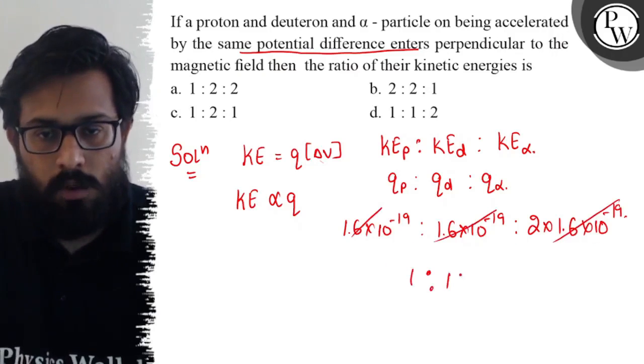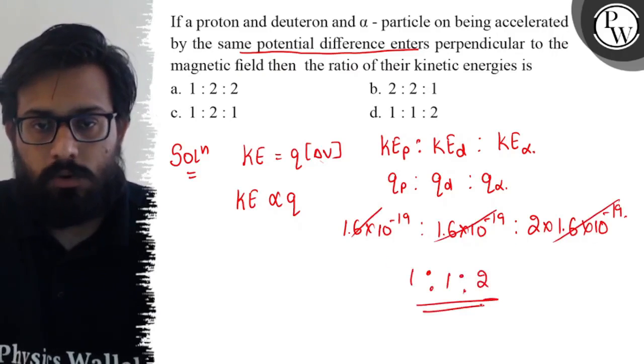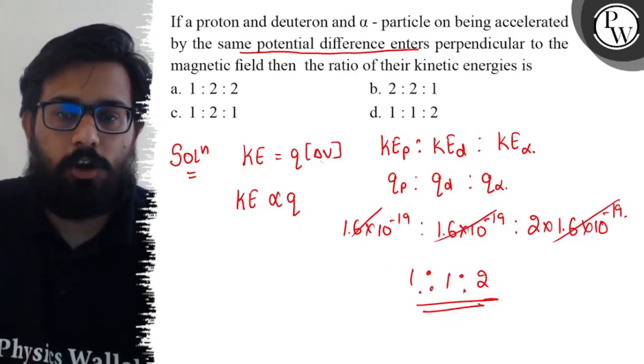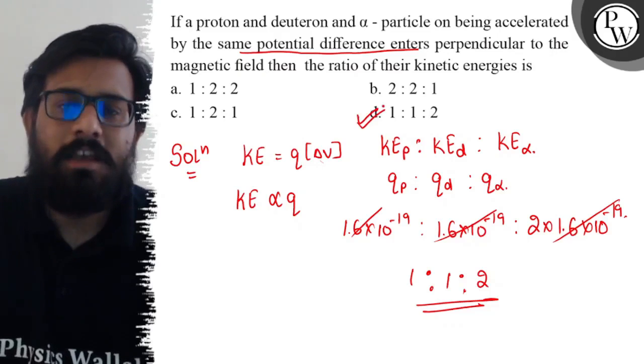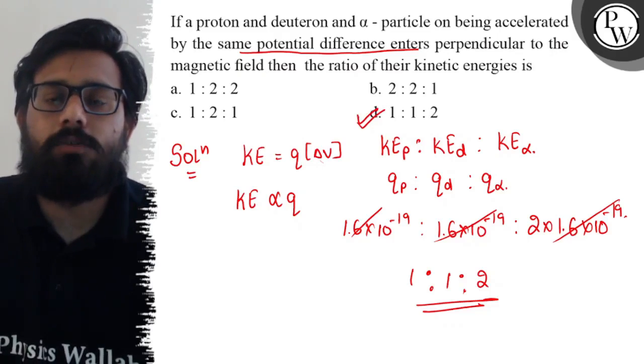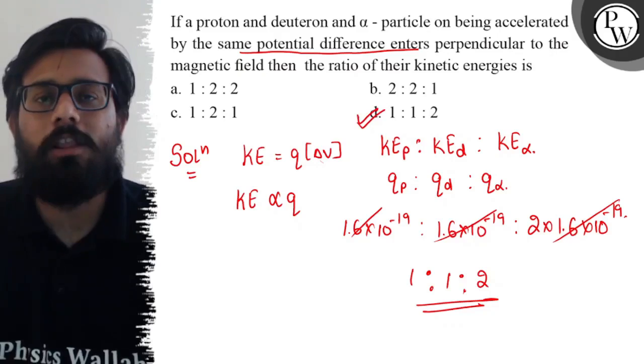All these parts get cancelled out and the ratio comes out to 1:1:2. So the ratio of the kinetic energy is 1:1:2, which is option D, and hence your D option is absolutely correct. I hope you got the concept of this question. All the very best.